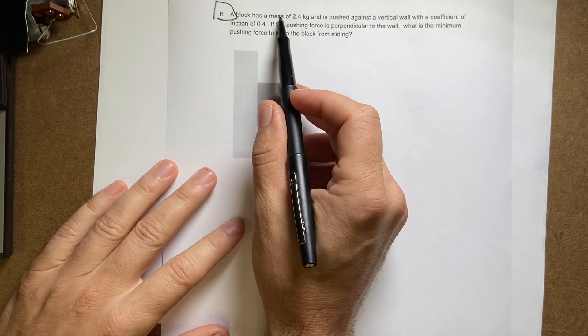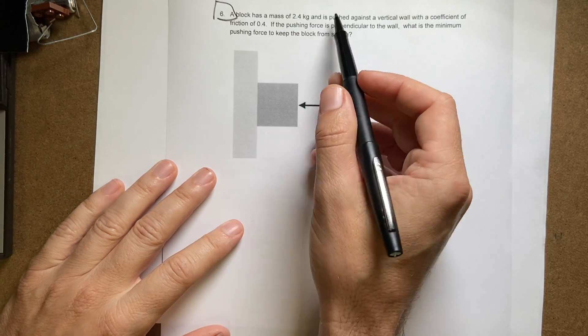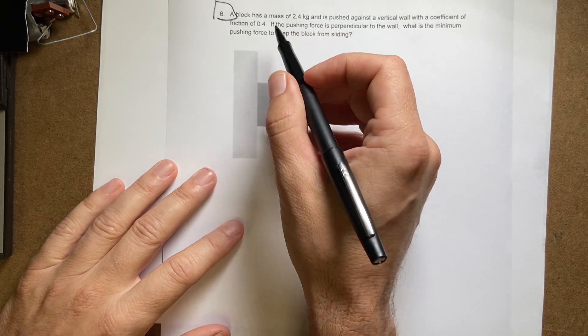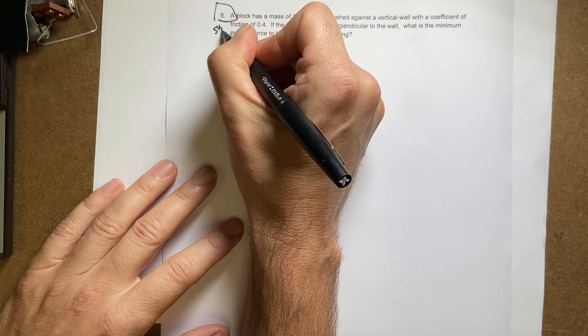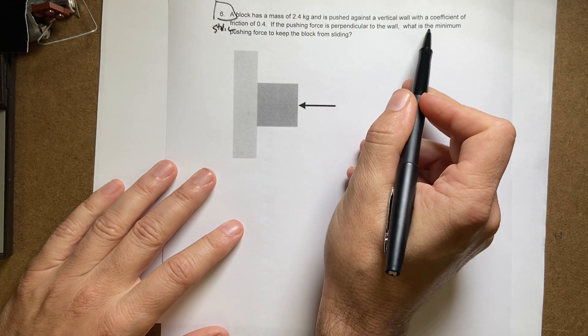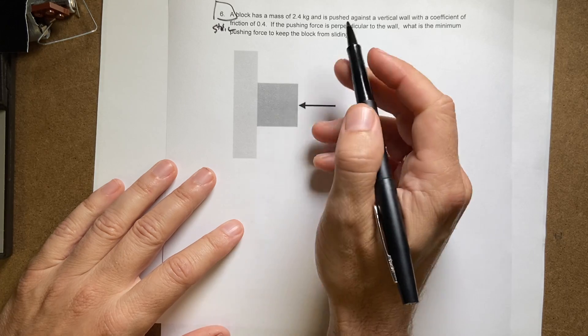So here I have a block of mass 2.4 kilograms pushed against the wall and the coefficient of friction is 0.4, that's static friction. If the pushing force is perpendicular to the wall, what is the minimum pushing force to keep the block up?